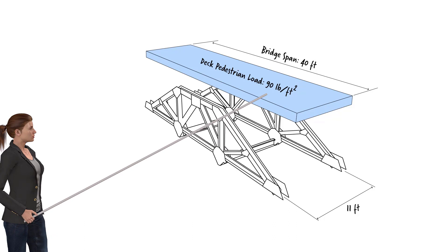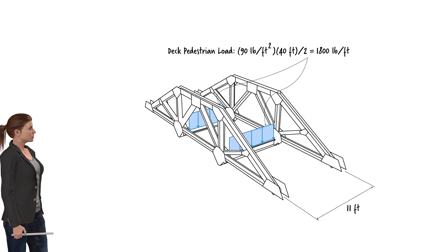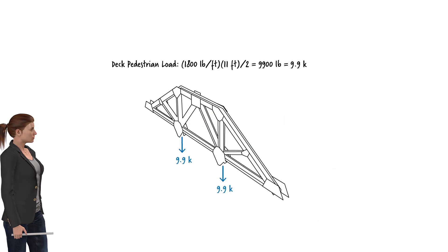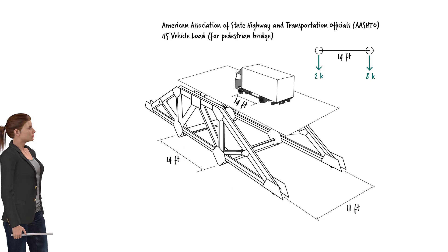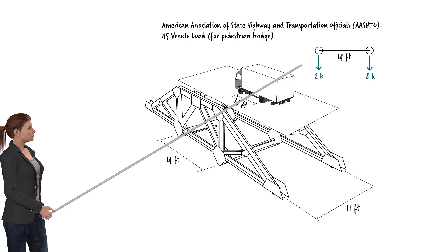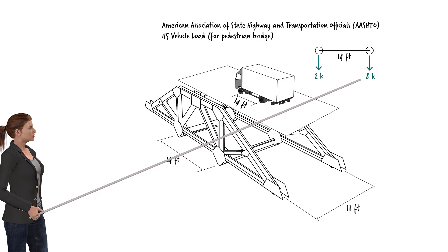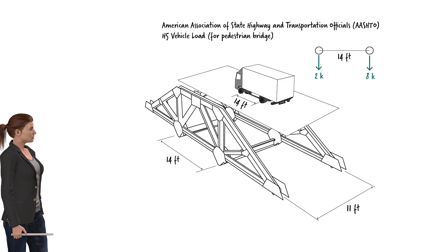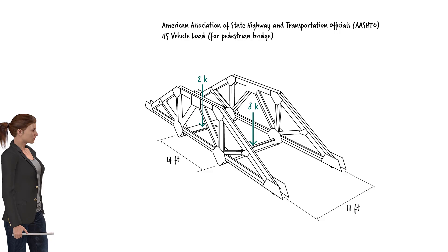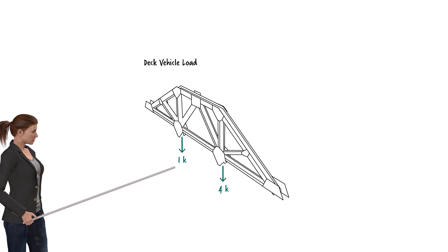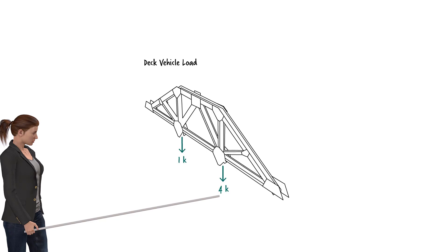The pedestrian load per square foot of the deck is 90 pounds, resulting in a distributed load of 1,800 pounds per linear foot on the cross beams. Therefore, the effect of the pedestrian load per truss joint equals 9.9 kips. For the truck load, we use the load recommended by AASHTO, which consists of two concentrated loads with a distance of 14 feet between them. The front axle load equals 2 kips and the rear axle load is 8 kips. The truss joint near the front axle takes a vehicular load of 1 kip, and the joint near the rear axle takes 4 kips.